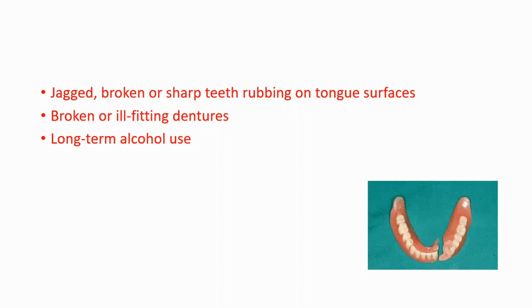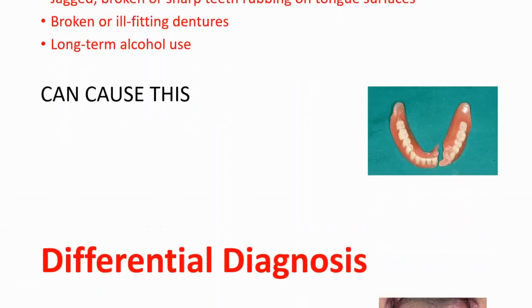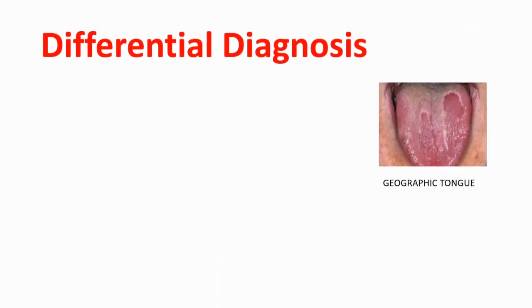Conditions such as broken or sharp teeth rubbing on tongue surfaces, broken or ill-fitting dentures, or long-term alcohol use can also cause oral hairy leukoplakia. These are common causes to consider.